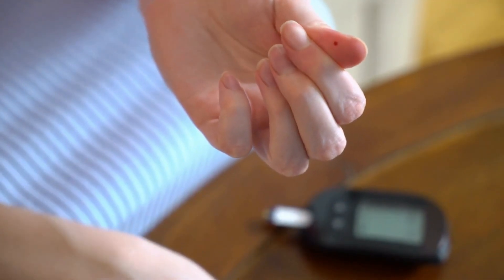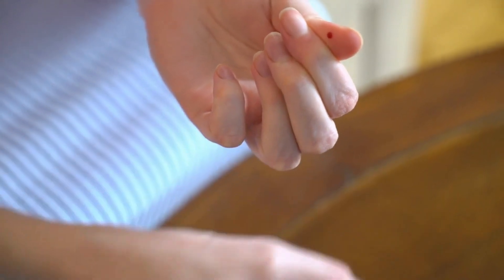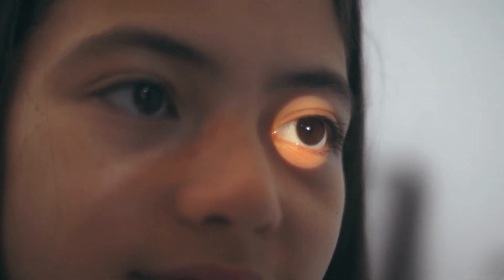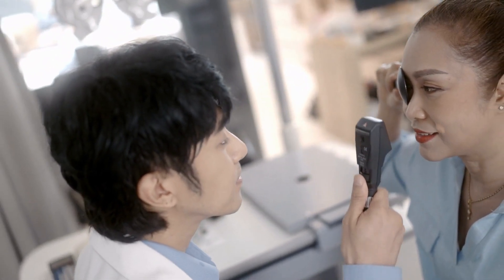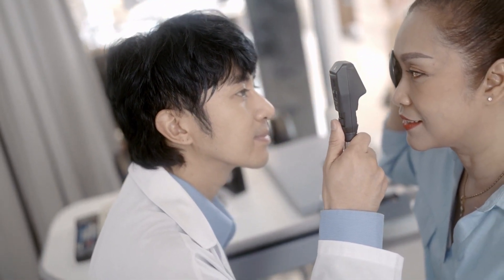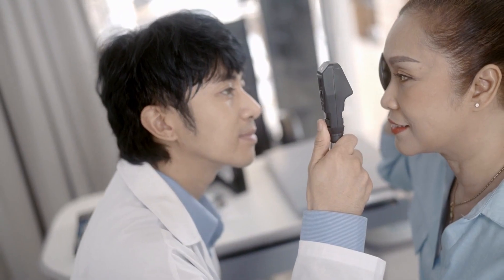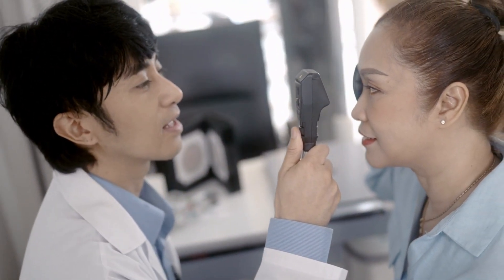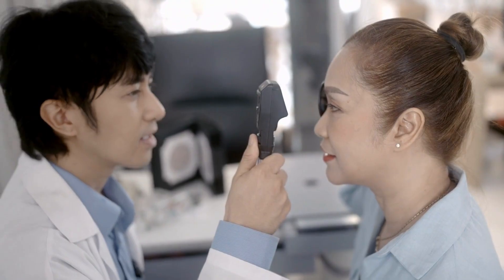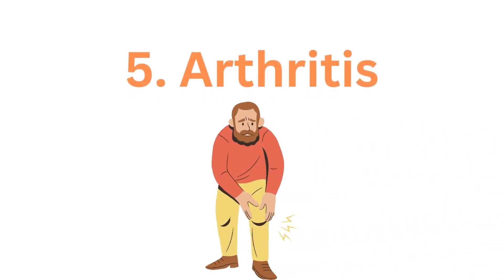If you have type 1 diabetes, you need to have your eyes tested right away for diabetic retinopathy. Checkups are recommended within the first five years after diagnosis and then annually thereafter. Treating diabetic retinopathy as soon as possible increases the likelihood of a successful outcome.